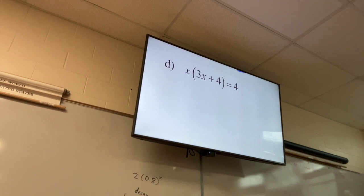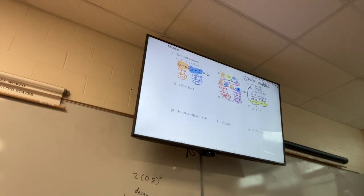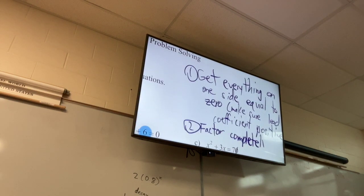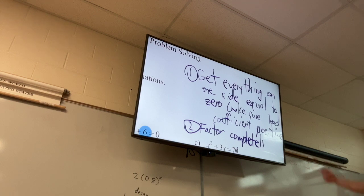Ian, what do I do first for this one? Step one: get everything on one side equal to zero. How do we get everything equal to zero? Subtract four — move the four over. Subtract four. Good.